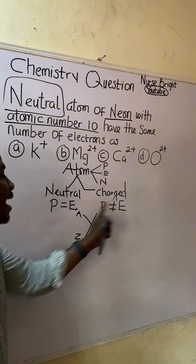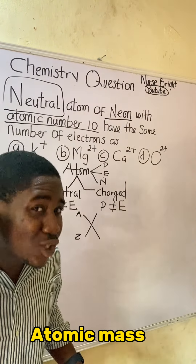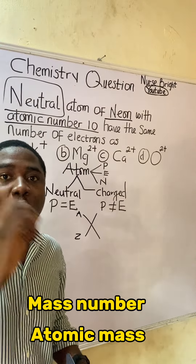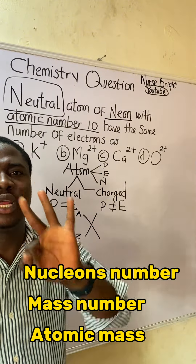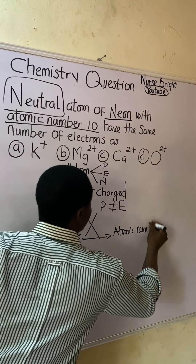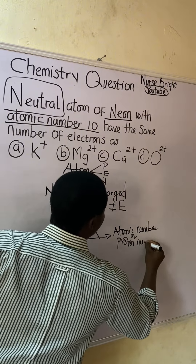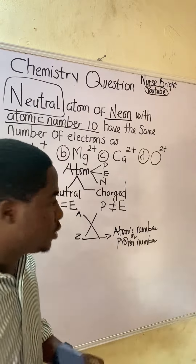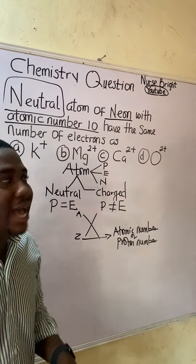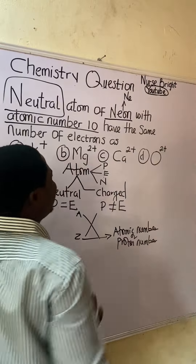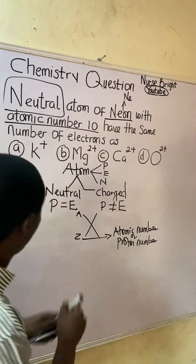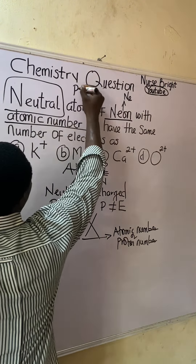A is called atomic mass, or mass number, or nucleon number. Z is called atomic number, or proton number. So atomic number Z for neon is 10. Neon is represented as Ne. The atomic number of neon is 10, so the proton number for neon is 10.